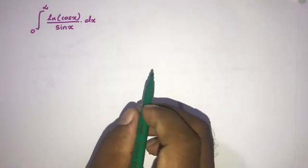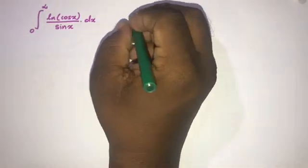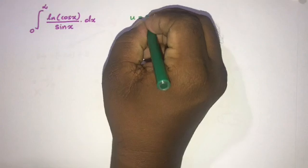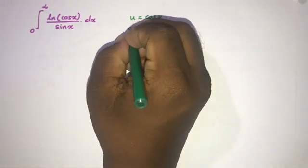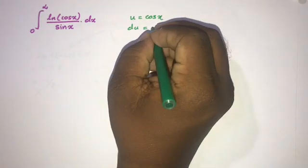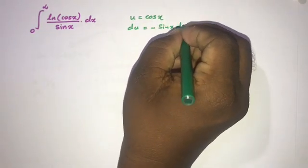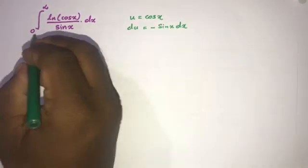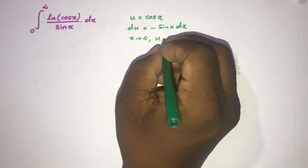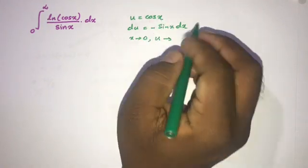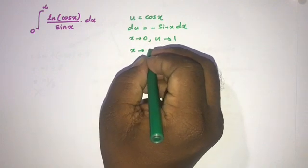First I am going to use substitution method. If we take a substitution u = cos(x), then differentiating gives du = -sin(x) dx. The lower limit: when x approaches 0, u approaches cos(0) = 1.